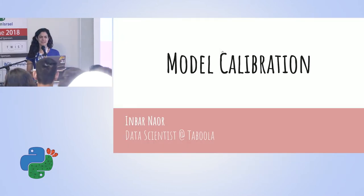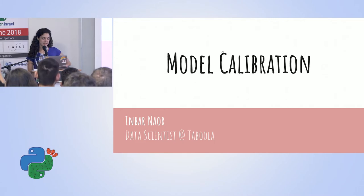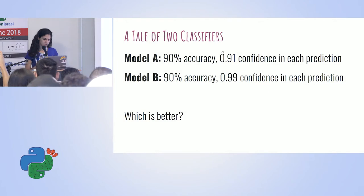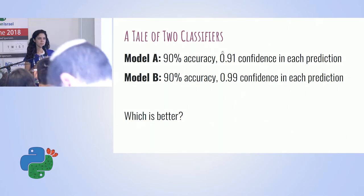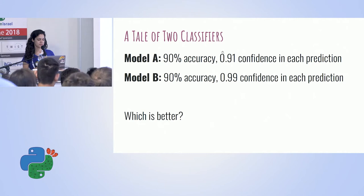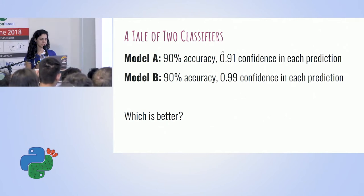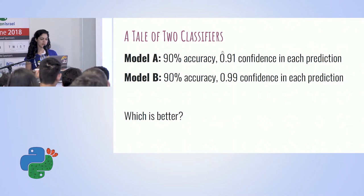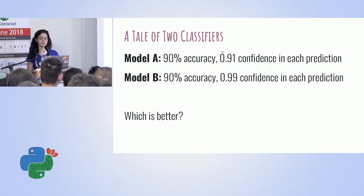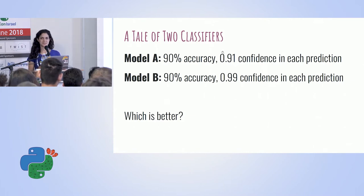Hi, my name is Invar Nahor. I'm a data scientist at Tabula, and I want to start this talk with a little question. So let's say you have two models — both have 90% accuracy — but model A has a 0.91 confidence in each prediction, while model B has a 0.99 confidence in each prediction. So which model would you say is better?